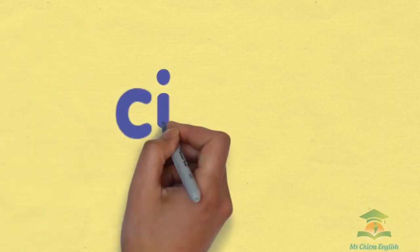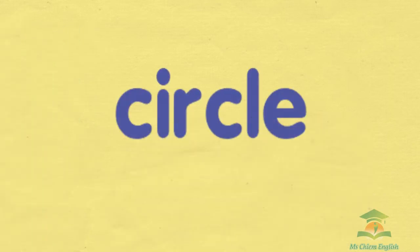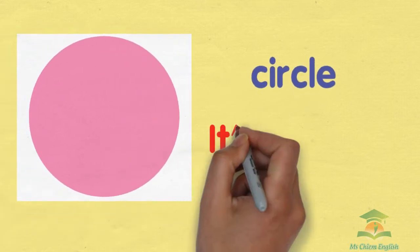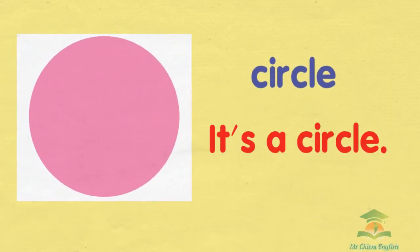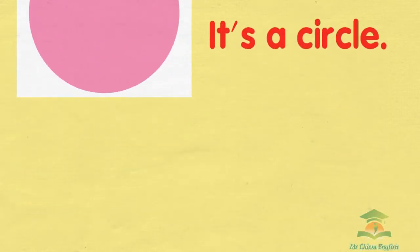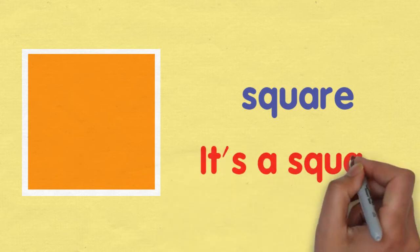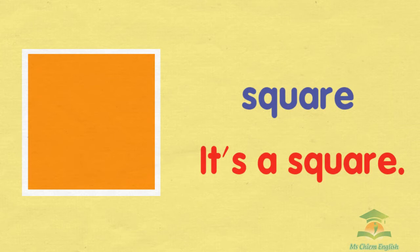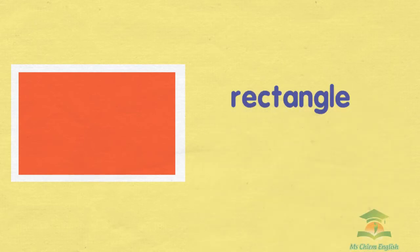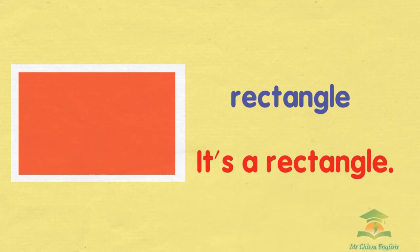Circle. It's a circle. Square. It's a square. Rectangle. It's a rectangle.